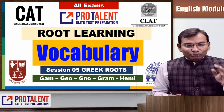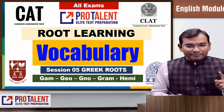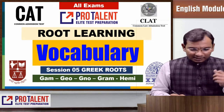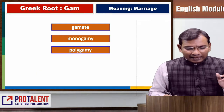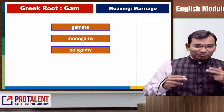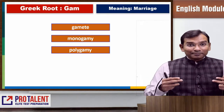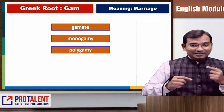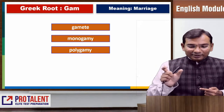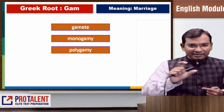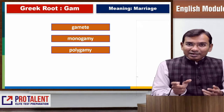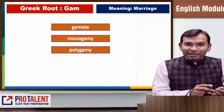Today's five roots are: GAM, GEO, GNO, GRAM, and HEMI. Let me start with GAM. GAM means marriage. So monogamy means a single marriage — mono means one. Bigamy means two marriages, polygamy means many marriages, and gamete is another related word.